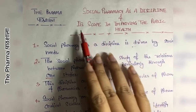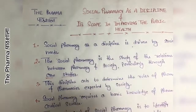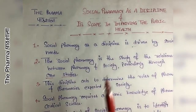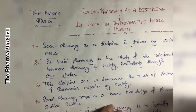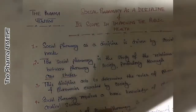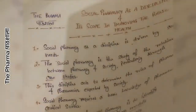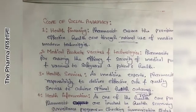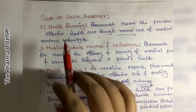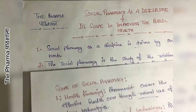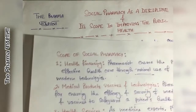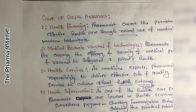The next topic is its scope in improving the public health. The scope of social pharmacy for the improvement of public health — these points have already been covered in the previous lecture under Social Pharmacy definition and scope, so please refer back to that topic as well.